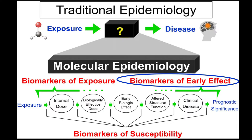What's the difference? Traditional epi is only focused on the association of exposure and disease. Molecular epi is really trying to understand what's going on inside this black box, and trying to unlock it by using tools called biomarkers. There are three types of biomarkers: exposure, susceptibility, and early effects. Genotoxicity is the most important biomarker of early effects on the causal pathway to disease development.